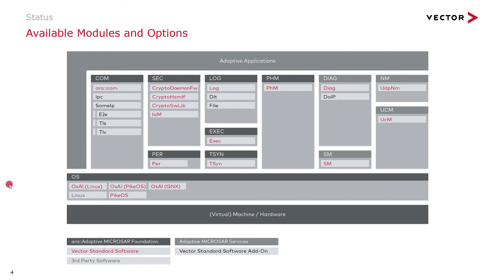Looking at the current layer architecture, we see clusters which are quite similar to what is defined in the AUTOSAR standard. We have the COM cluster which provides the ARA COM API — the middleware — featuring IPC communication for ECU-internal communication. We also have the SOME/IP protocol, also known from Classic AUTOSAR, which allows external communication with other Adaptive AUTOSAR ECUs.